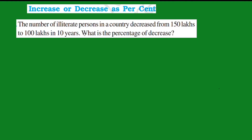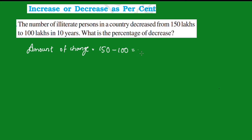The number of illiterate persons in the country decreased from 150 lakhs to 100 lakhs in 10 years. What is the percentage decrease? The decrease in number is 150 minus 100 equals 50 lakhs.